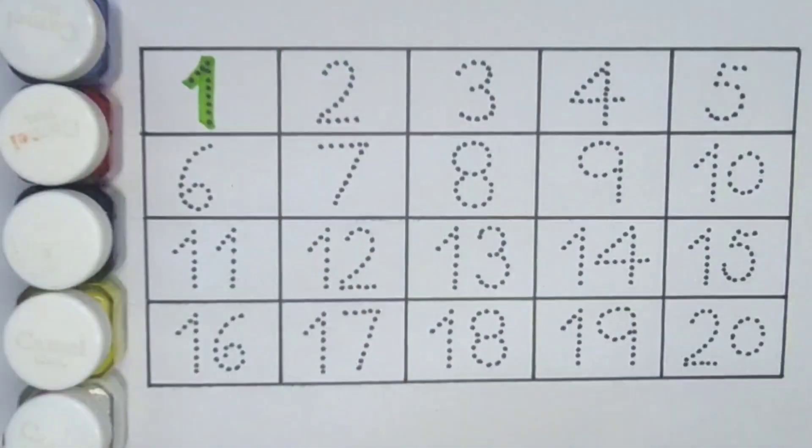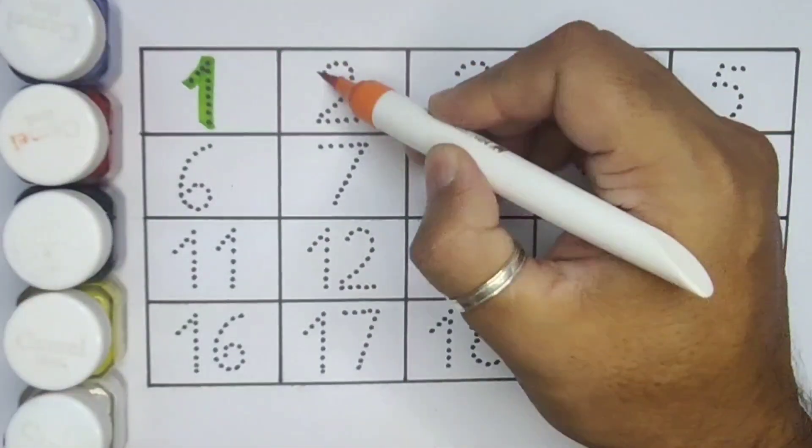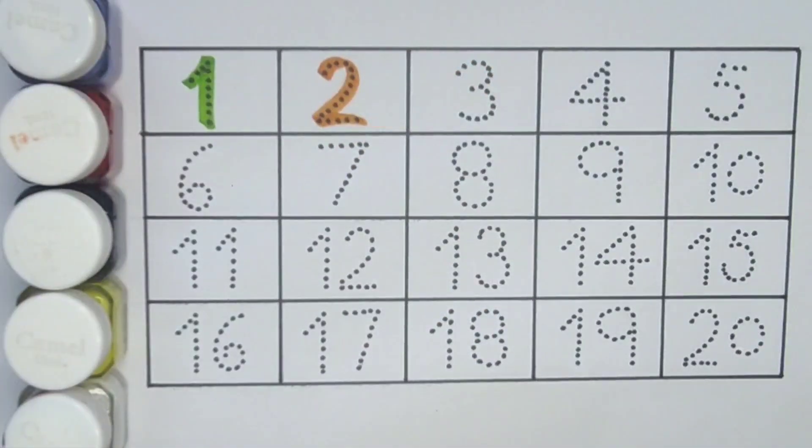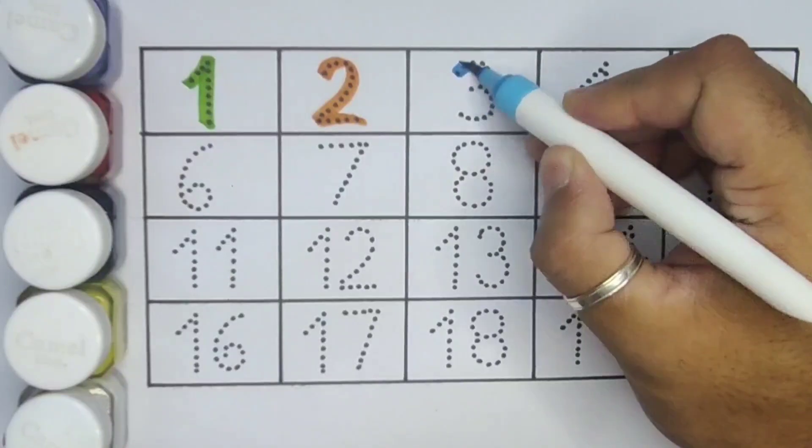Next kids, two, number two. Next kids, three, number three.